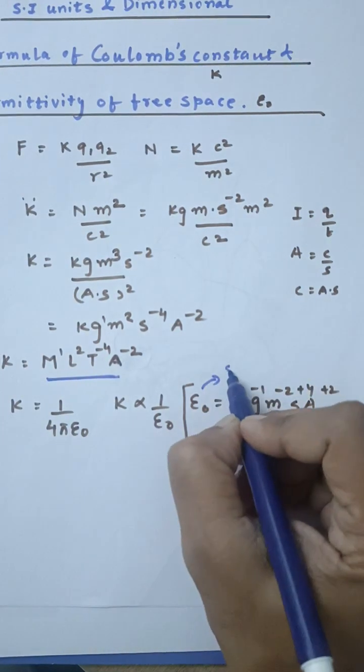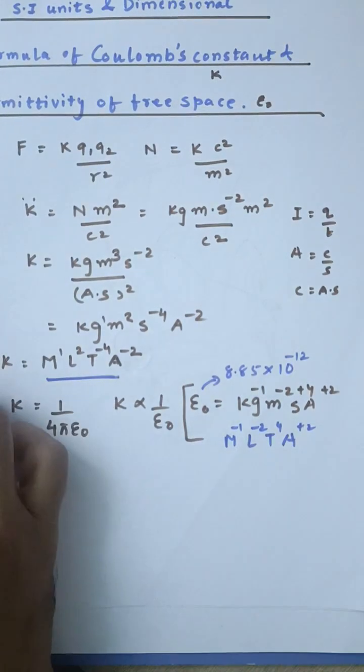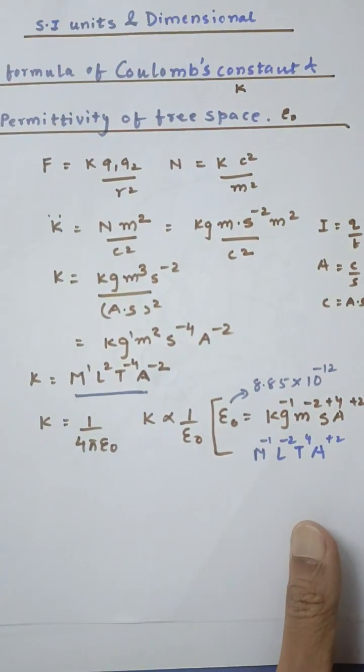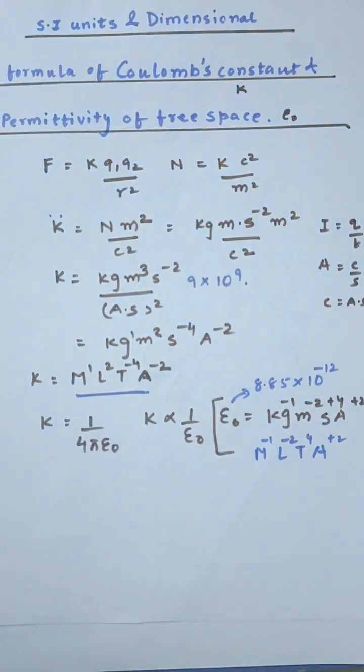By the way, ε₀ has the value 8.85 × 10⁻¹² in the SI unit, as well as the dielectric constant K has the value 9 × 10... and I hope this video was helpful.